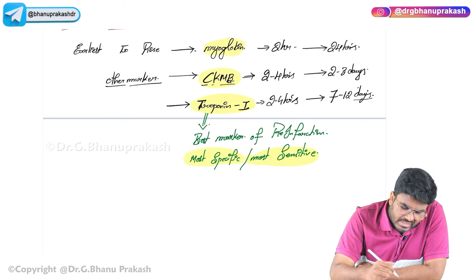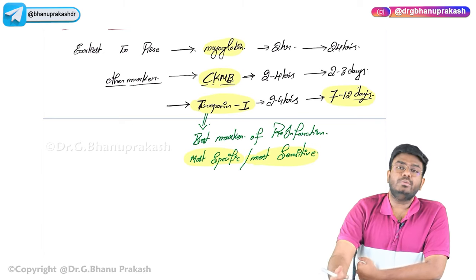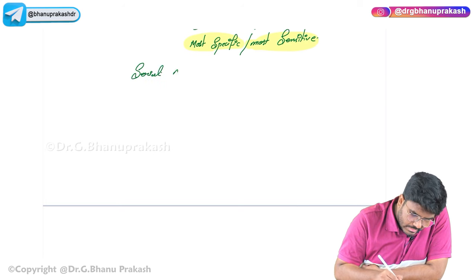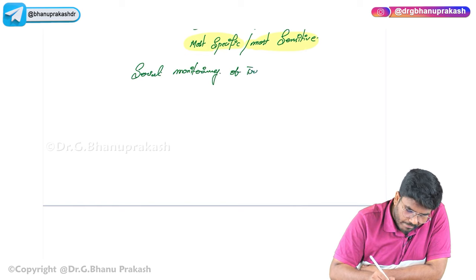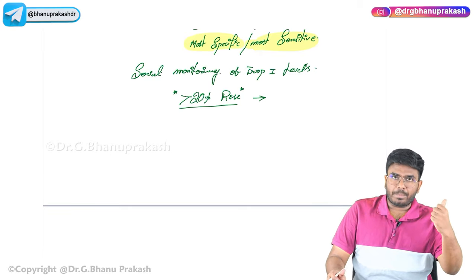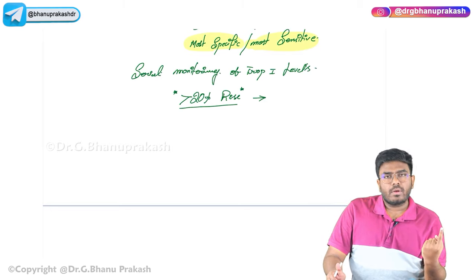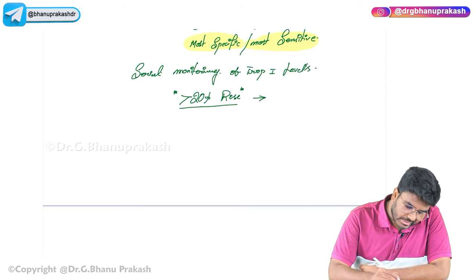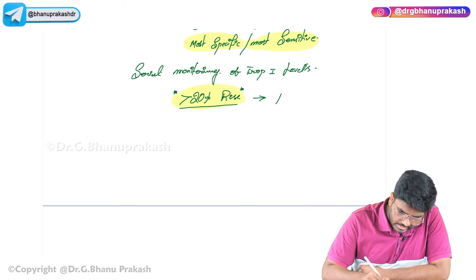Troponin I is the best marker of re-infarction. We do serial monitoring of troponin I levels. When comparing to the previous value, if there is a 20% rise in troponin levels, it suggests the patient has gone into re-infarction again. So a 20% rise in troponin I levels on serial monitoring suggests re-infarction.